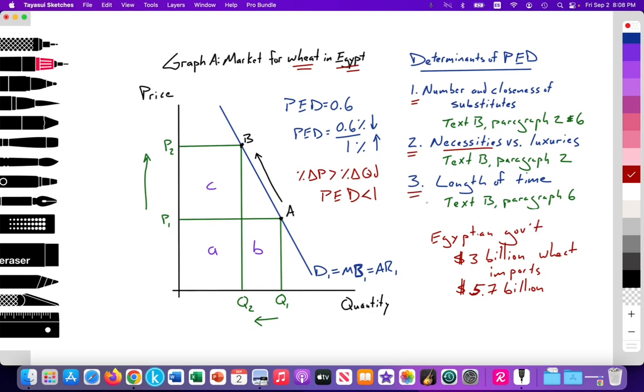And number two, food by definition is a necessity, as explained in Text B, Paragraph 2, and also length of time. It takes time to plant the seeds, to sow them, to harvest them. And in Text B, Paragraph 6, it highlights that water scarcity makes it very difficult to grow food. And so in the short run, the PED is less than one.